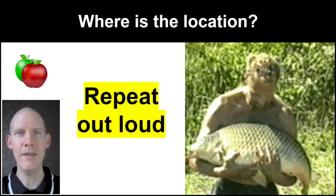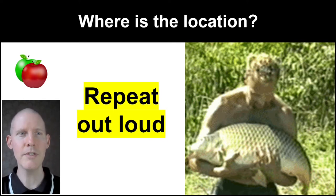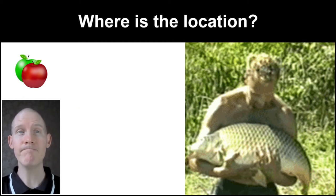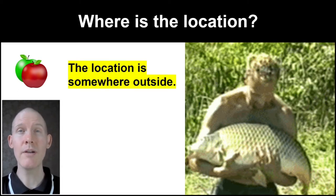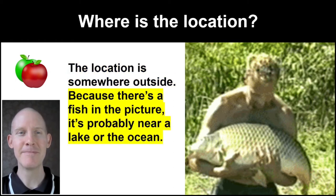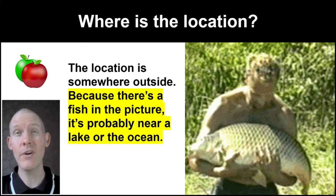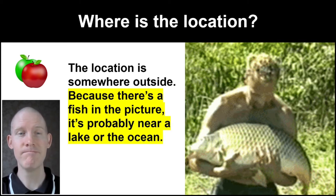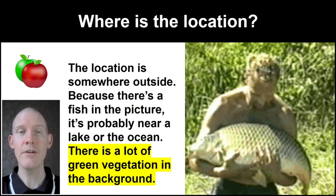There is a lot of green vegetation in the background. Remember I said at the beginning we're going to do pronunciation? Let's do it. Repeat out loud: 'Where is the location?' 'The location is somewhere outside.' 'Because there's a fish in the picture, it's probably near a lake or the ocean.' 'There is a lot of green vegetation in the background.'